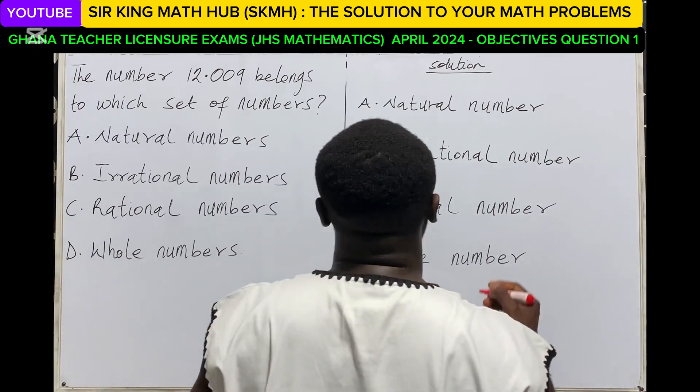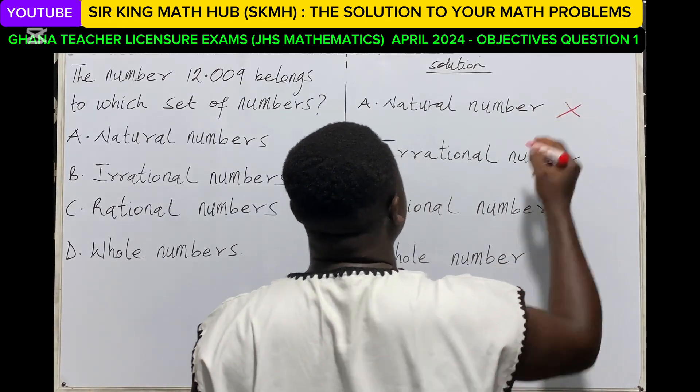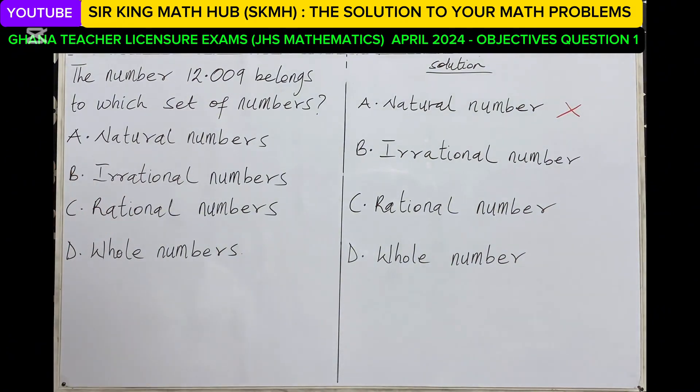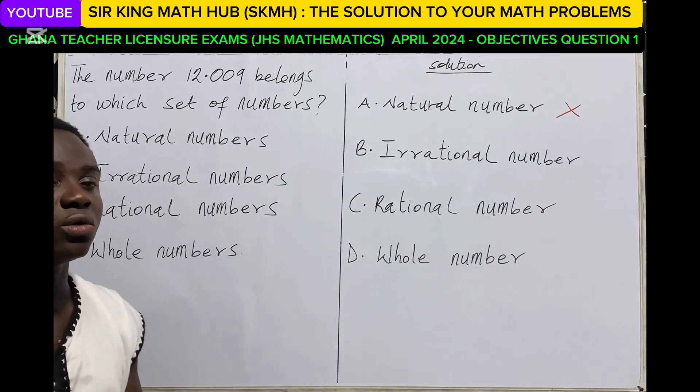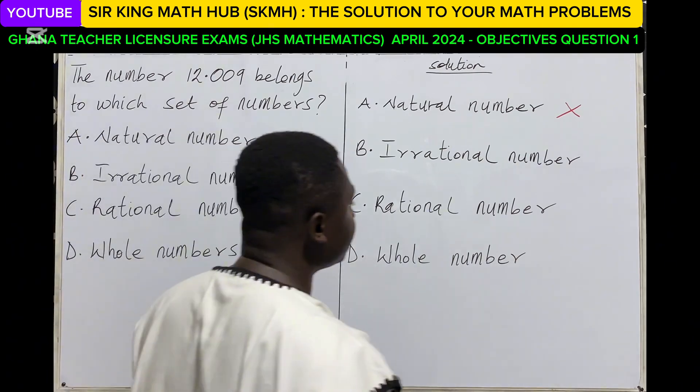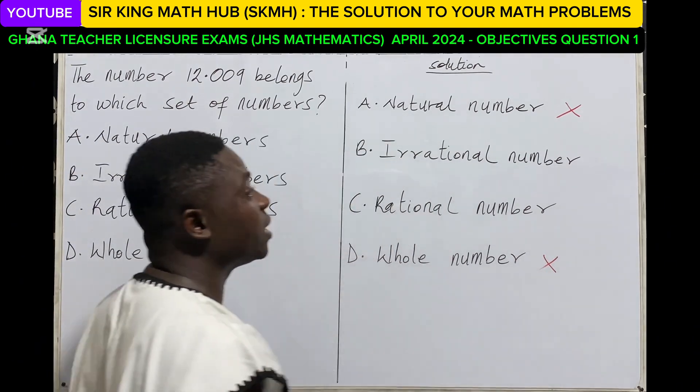So the number does not belong to the set of natural numbers. Let's also look at whole numbers. Whole numbers is just an extension of counting numbers. So when we include zero in counting numbers, then we get a set of whole numbers. And again, 12.009 is also not a whole number.